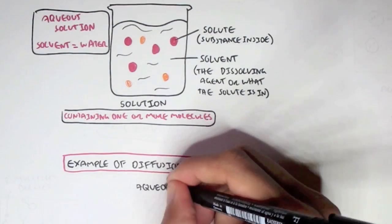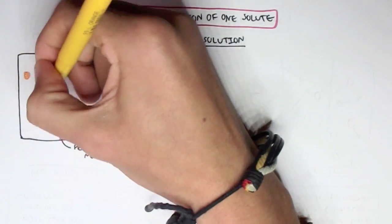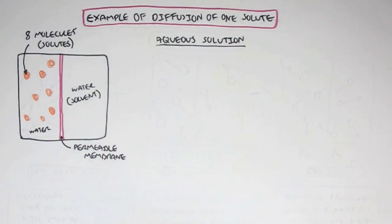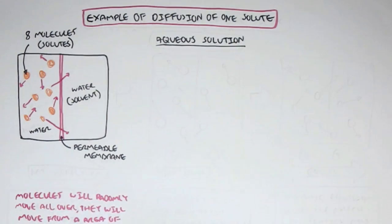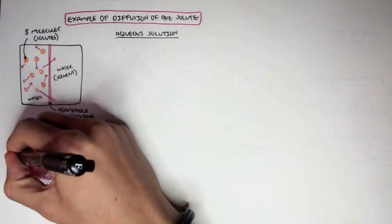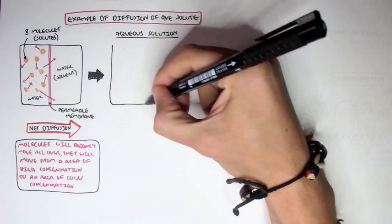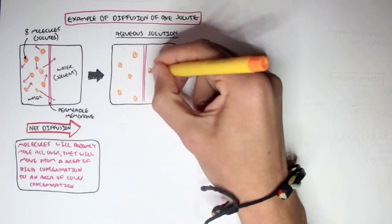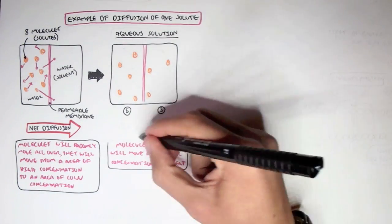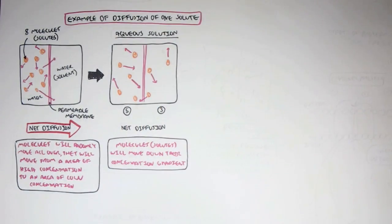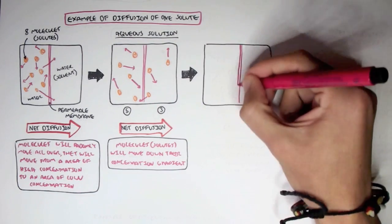Let's look at an example of diffusion of one solute inside an aqueous solution. We have a container with a permeable membrane, and we have eight solute molecules on the left side inside an aqueous solution. Molecules will randomly move, and they will move from an area of high concentration to an area of low concentration. Since there are higher concentrations on the left, the net diffusion will move to the right. The solutes move down their concentration gradient.